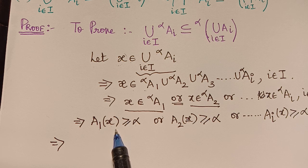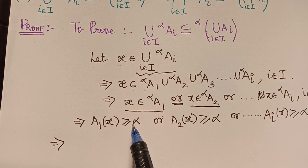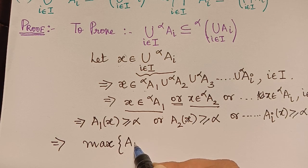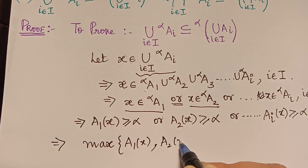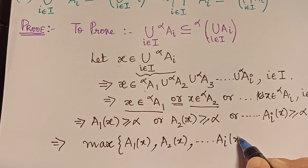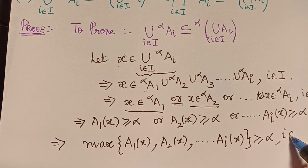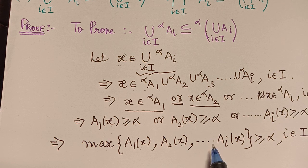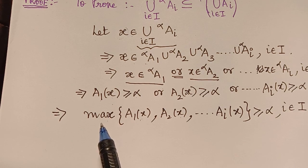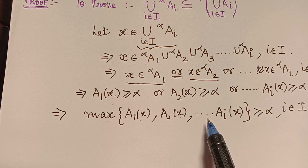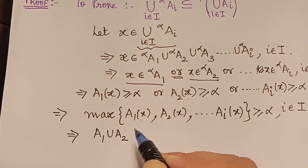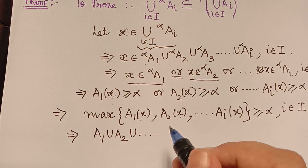Since at least one of A_1(x), A_2(x), ..., A_i(x) is greater than or equal to alpha, the maximum over all these values must also be greater than or equal to alpha. So we can write: max(A_1(x), A_2(x), ..., A_i(x)) ≥ alpha. By the definition of fuzzy union, this maximum can be written as (A_1 union A_2 union ... union A_i)(x).